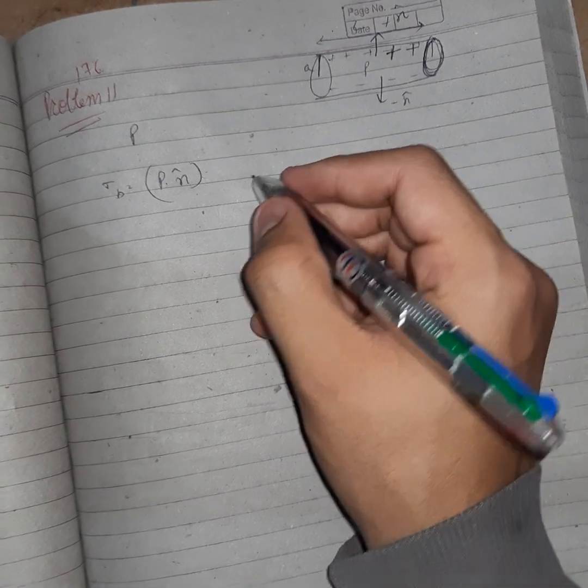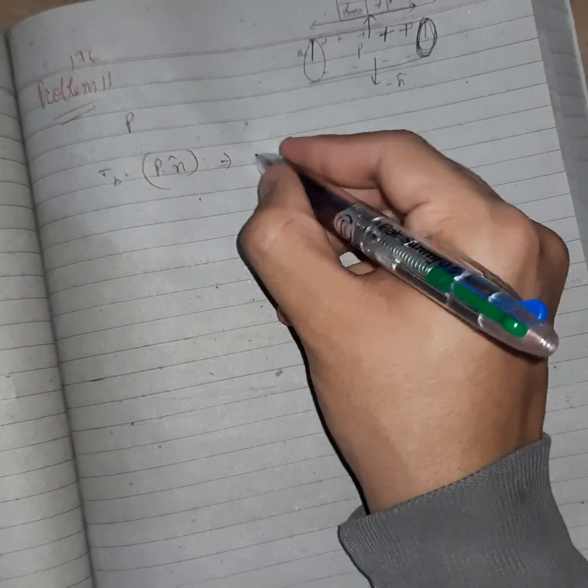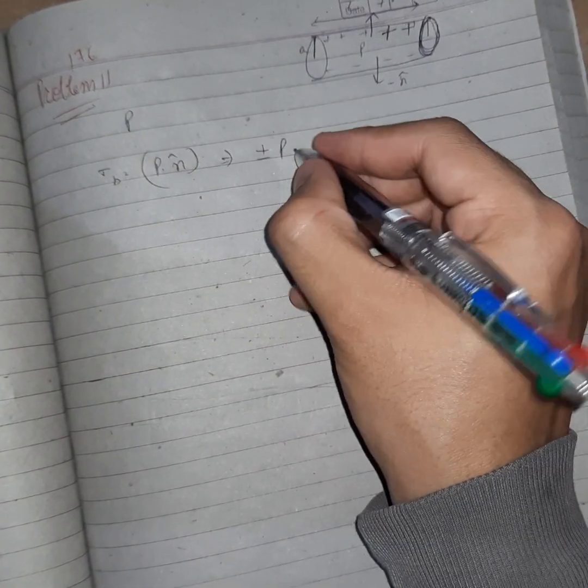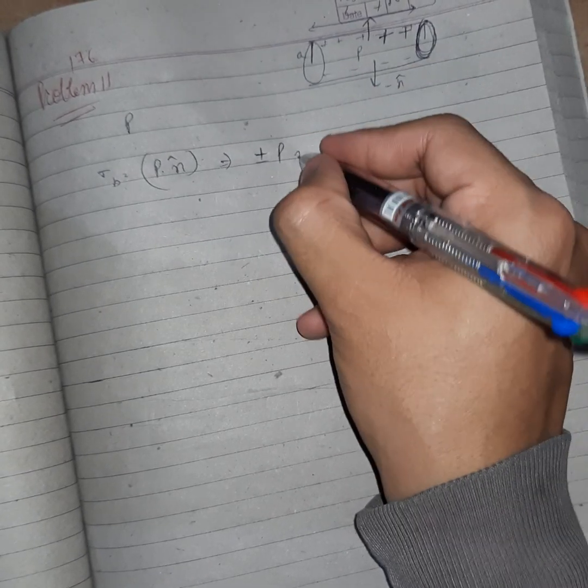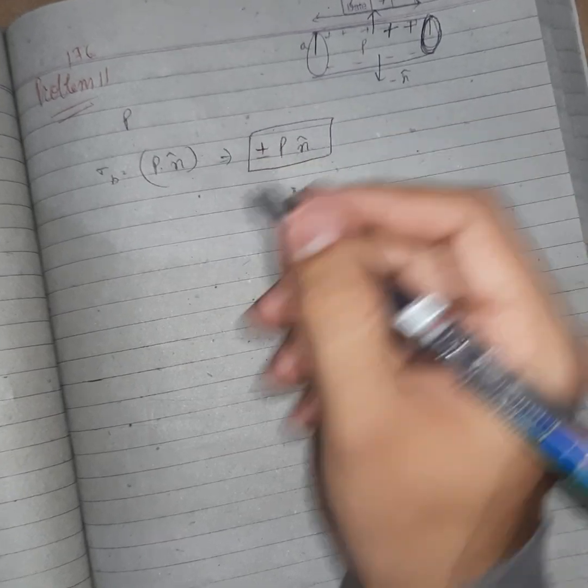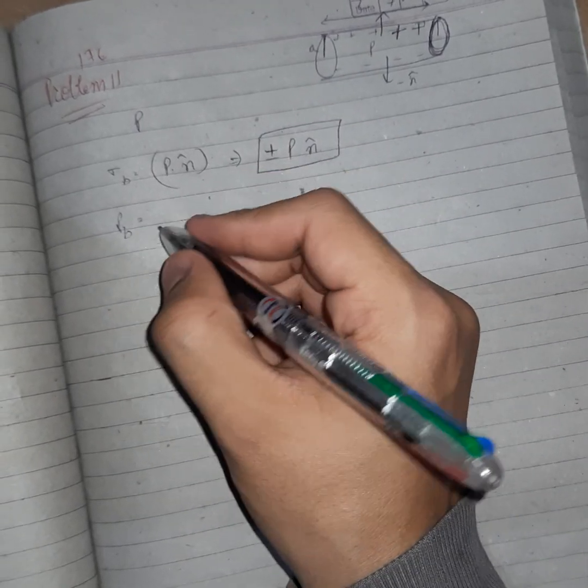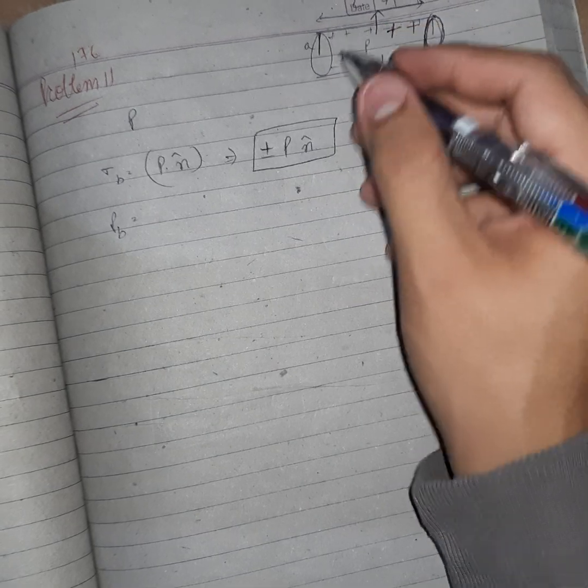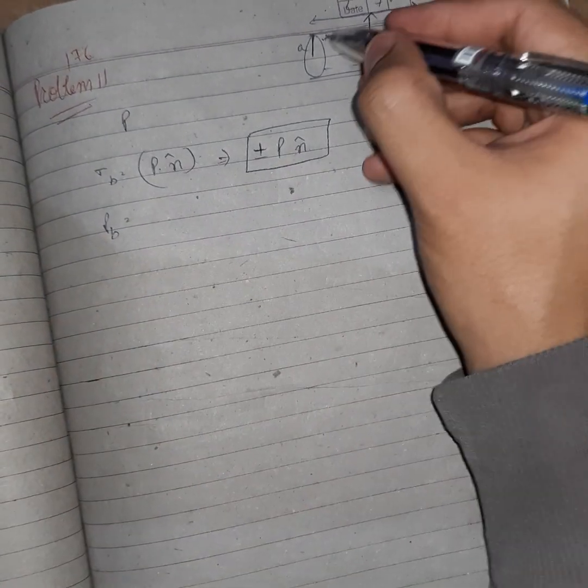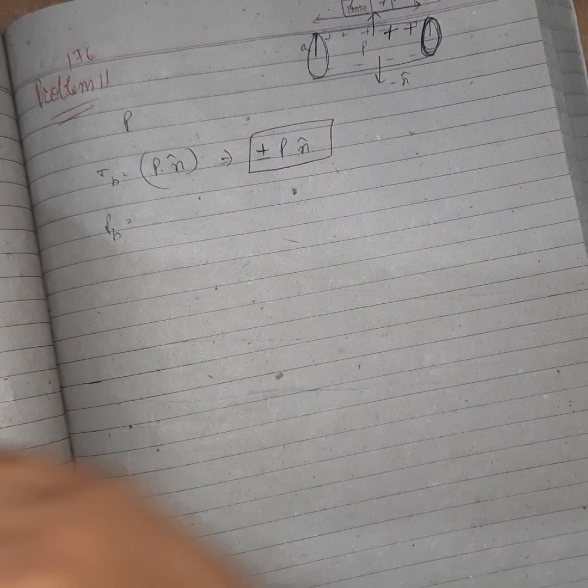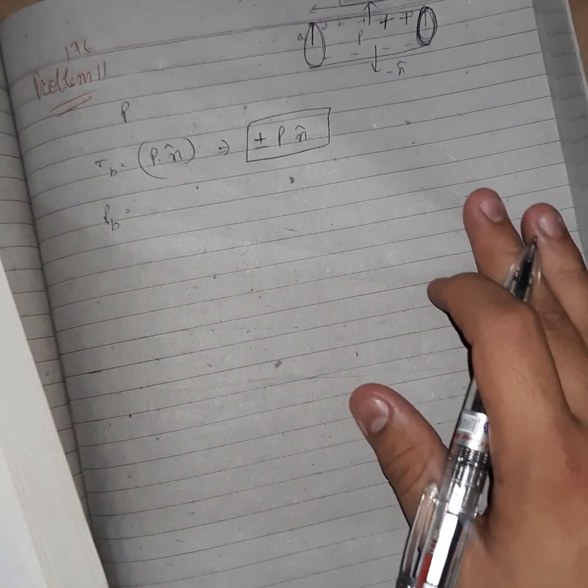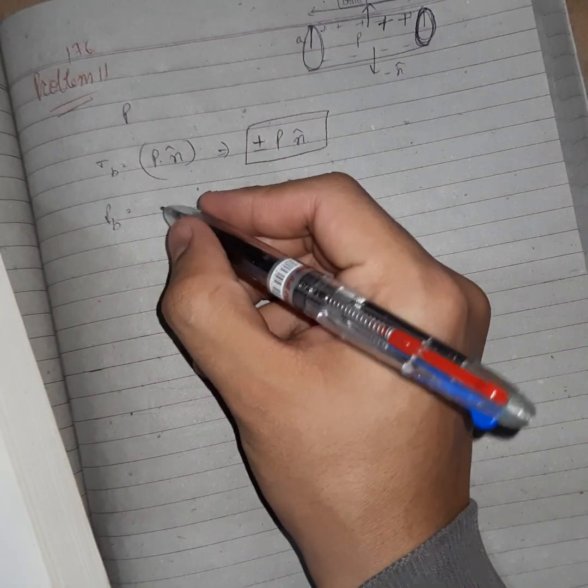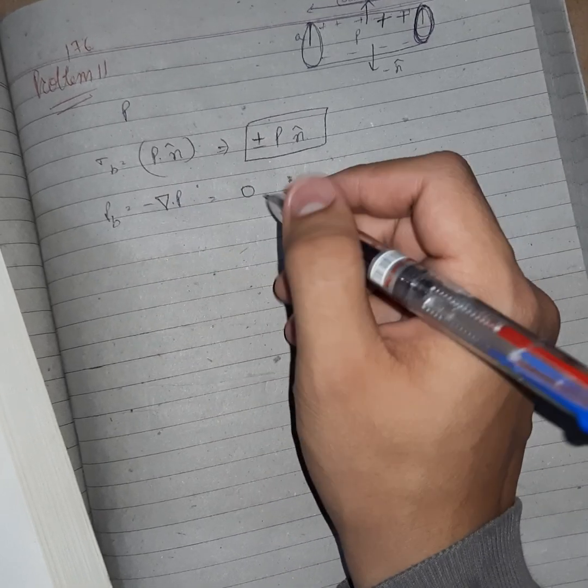So we have to take both. So sigma_b is plus minus n cap or normal. Rho_b: as this is uniform, yes it is uniform, so for uniform objects or uniform polarization, uniform means constant. As you know that it is divergent, so rho_b will be zero.